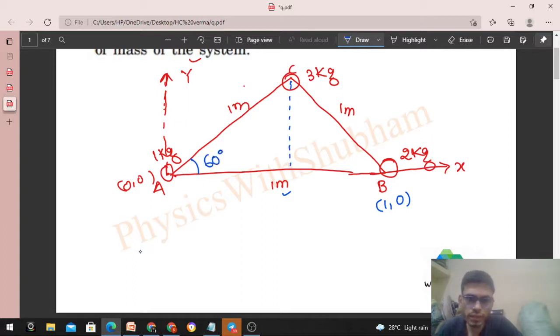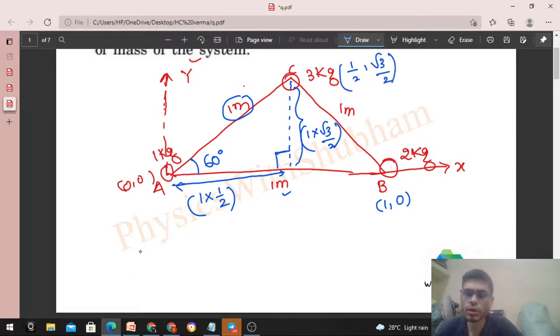Now for C, this angle will be 60 degrees. This length will be 1 × cos(60°). This is a right angle triangle, so this is 1 × cos(60°) which is 1/2, and this height will be 1 × sin(60°) that is √3/2. So x-coordinate is 1/2 and y-coordinate is √3/2. Now we know the coordinates of all three particles.